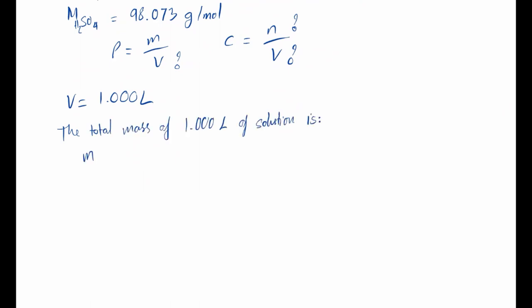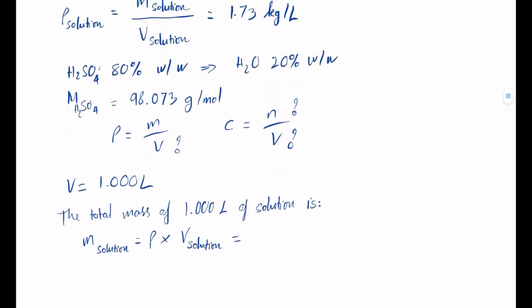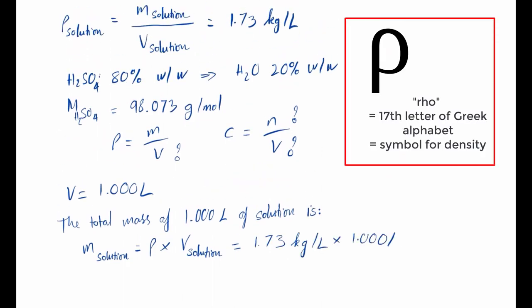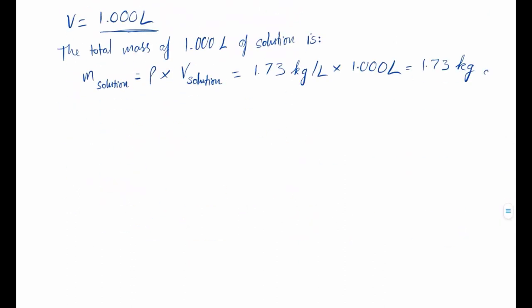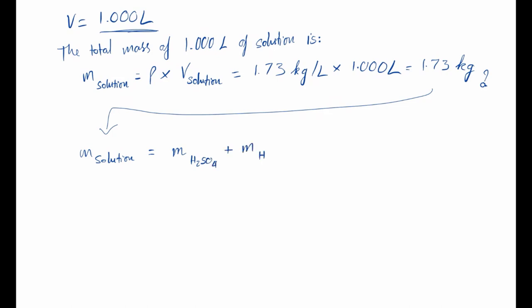Now we can find the total mass of the solution when the volume is one liter using density: m = ρ × V = 1.73 kilograms. This means the total mass — which is the sum of the mass of sulfuric acid and the solvent water — equals 1.73 kilograms. Can we decompose that so we can use the mass of sulfuric acid to calculate the concentration?